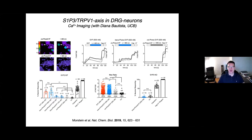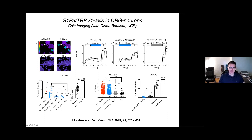We then wanted to see if we could take this one step further and look at entirely endogenous systems. One system we became aware of is the coupling of S1PR3 to the pain channel TRPV1. A model system in which both are endogenously expressed is dorsal root ganglion (DRG) neurons. Together with the Bautista lab at UC Berkeley, we looked at the opening of TRPV1 channels coupled to S1PR3 using a calcium dye. When you apply sphingosine-1-phosphate you see an increase in calcium. If you apply the photoswitchable lipid in the inactive cis form, you don't see this increase. Only upon irradiation with blue light do you see the increase in calcium, indicating we can control this process with light.